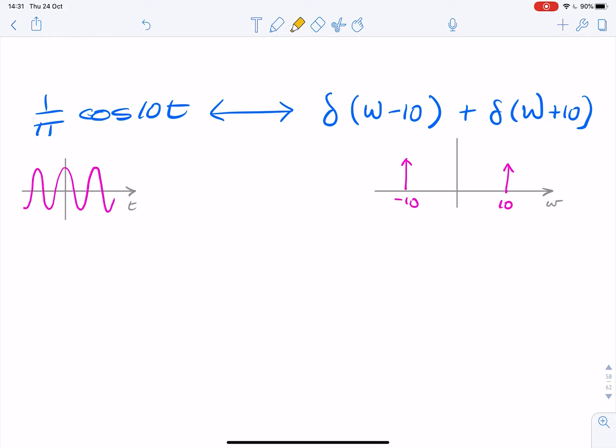One student asked me about the Fourier transform of a cosine and how he was questioning why we have the two impulses at plus and minus 10.